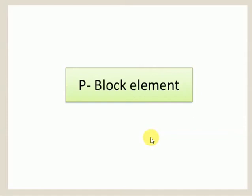Let's start our discussion about P-block elements. In the P-block elements, which elements are called as P-block? It means that the differentiating electron is the one that differs from one orbital to another orbital, from one element to another element. These are called differentiating electrons. If the differentiating electron entered into the P orbital, then it is called a P-block element.